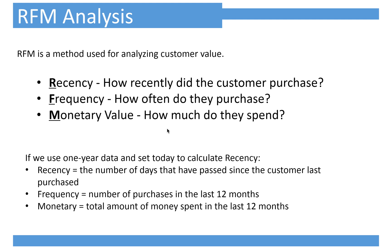Third is monetary. It is the total amount of money spent in the last 12 months. For example, in the last 12 months, suppose a customer purchased $1,000 — it must be more valuable than a customer who purchased only $1. So this is the three-dimension approach to evaluate customer value.